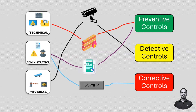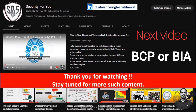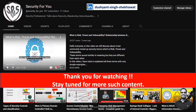The difference between control functions — preventive, detective, corrective — and control types — physical, technical, and administrative — is important. Termination policies, hiring policies, background checks, separation of duties, and classification of data are preventive controls and administrative controls at the same time. Understanding these types of controls is essential when conducting a risk assessment. Next, a video on business continuity planning or business impact analysis is coming, so stay tuned.